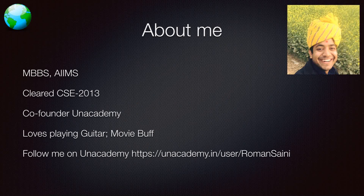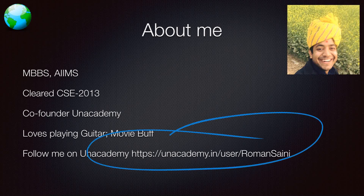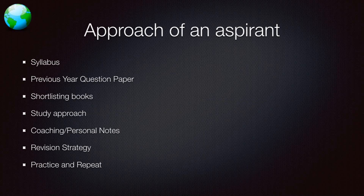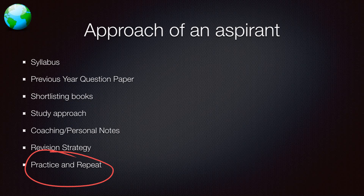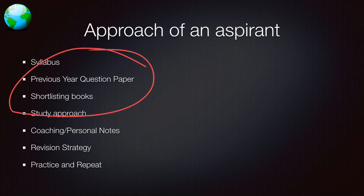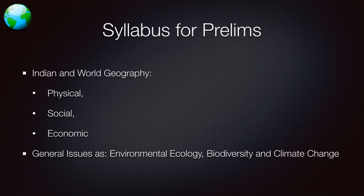You can ask your doubts and queries in the comments below, and you can follow me on Unacademy on this link. So what is the approach of a typical aspirant? Ideally, he or she should first read the syllabus, then read the previous year question papers, shortlist books to study, develop a study approach, then coaching or personal notes depending on preference, then a revision strategy, and then practice and repeat. Unfortunately, people directly jump to coaching and personal notes without going through these four steps, which is a very bad thing.